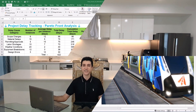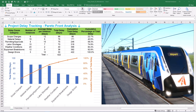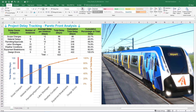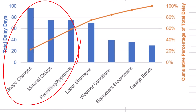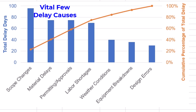Step 3 is interpretation of results and mitigating delays. First, let's focus on the columns — these represent the total delay in days for each delay cause category, ordered from tallest to shortest. The taller the column, the bigger the total delay impact of that cause. In our example, it's clear: scope changes, material delays, and permitting or approvals are towering above the rest. These are our vital few delay causes based on Pareto principles — the categories contributing most significantly to our project delays.